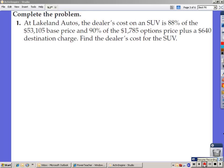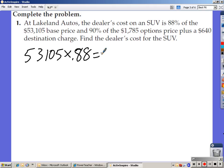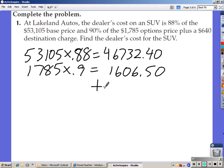At Lakeland Auto, the dealer's cost on an SUV is 88% of the $53,105 base price. So, $53,105 times .88, $46,732.40. And 90% of the $1,785 options price, which is $1,606.50. Add our destination charge to the bottom of it, which is $640. Add those three things together. You should come up with a dealer's cost of $48,978.